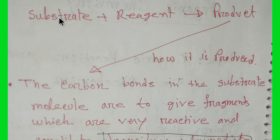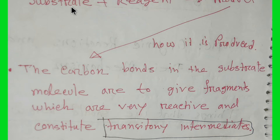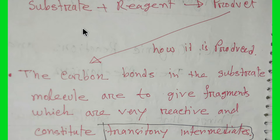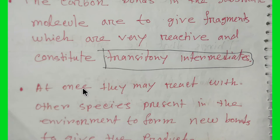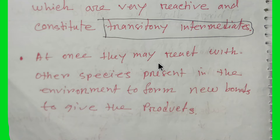These fragments are very reactive and constitute a transitory intermediate. At once, these transitory intermediates may react with other species present in the environment to form new bonds and give the product.